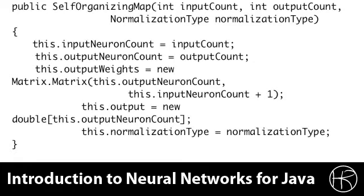We begin by looking at how this class is implemented. The self-organizing map class is dominated by two main functions. First is the constructor that you see here; the other is the winner function that determines which neuron actually won with the given input. The constructor initializes the main instance variables. We keep track of how many input neurons we have and how many outputs.